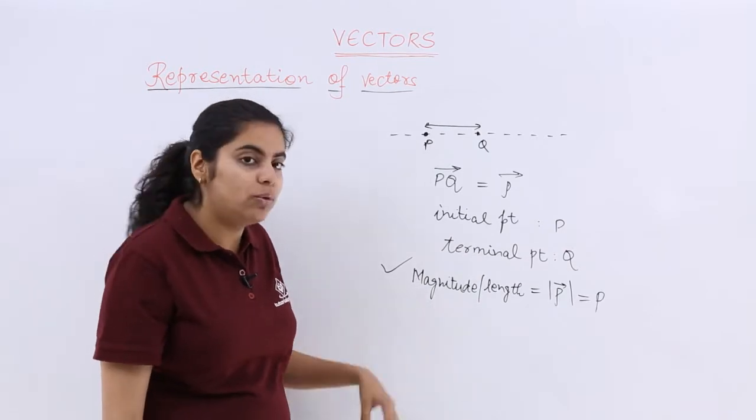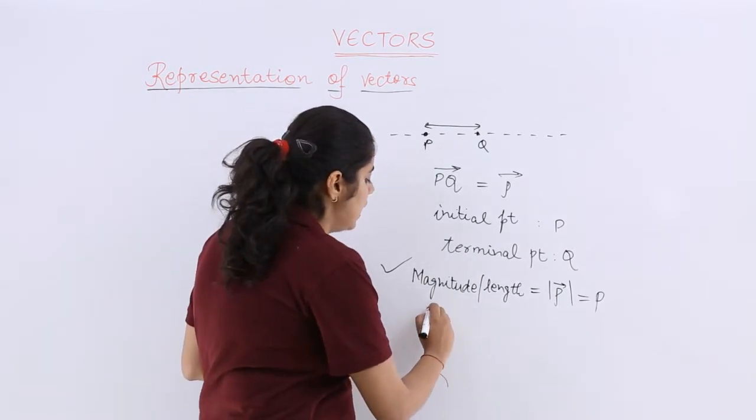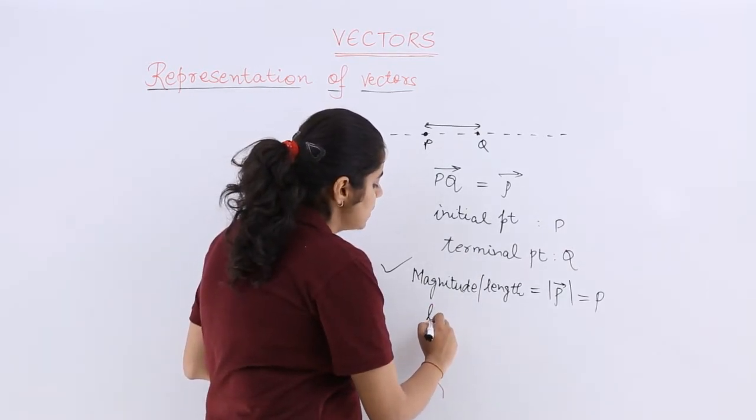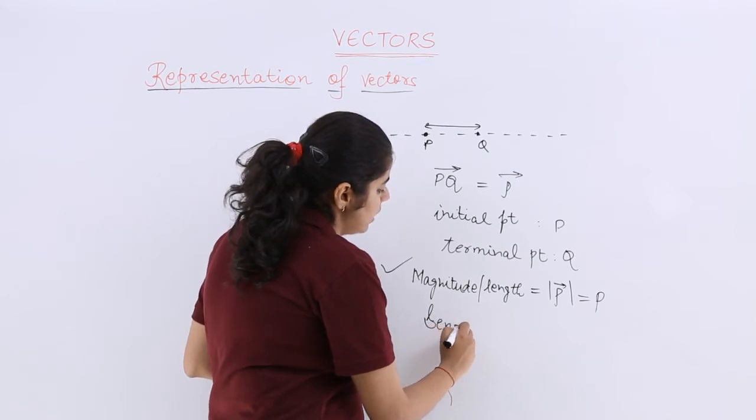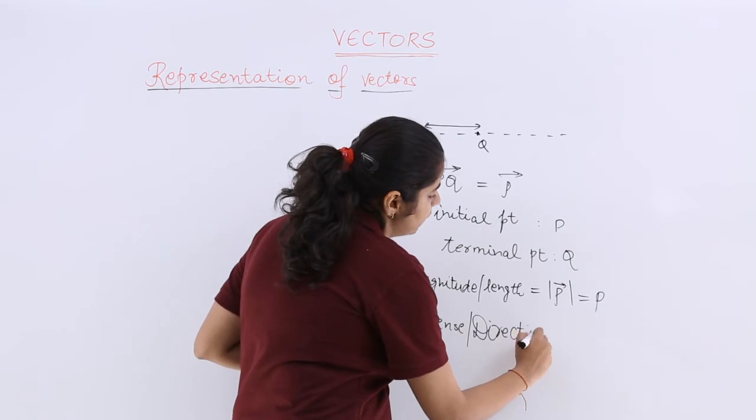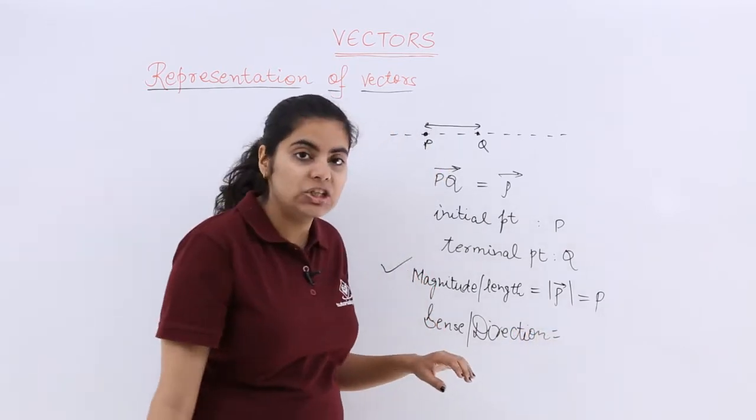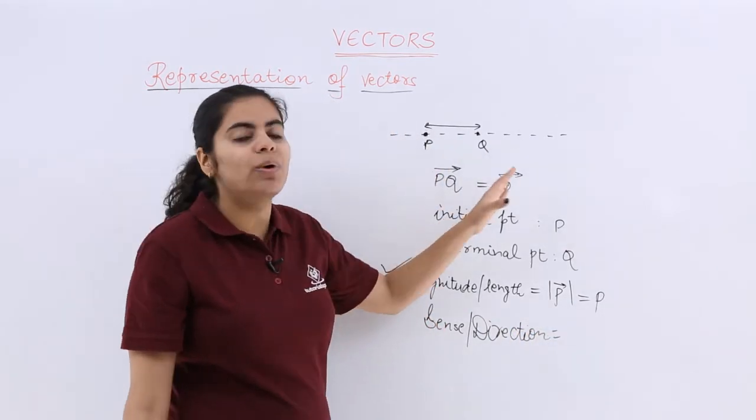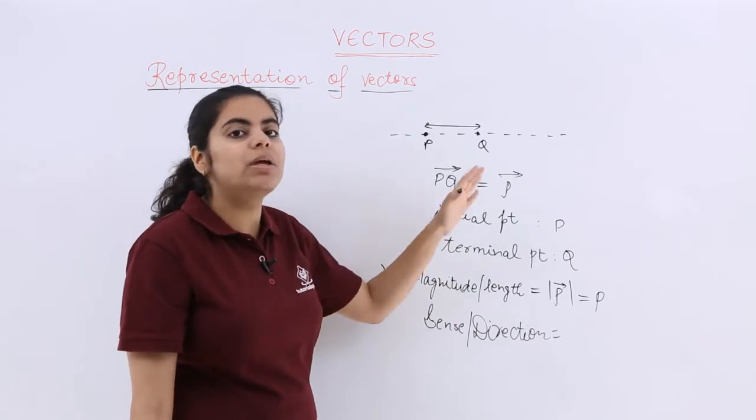Now next, having discussed magnitude and length, I will talk about the sense. The sense is also called the direction. What is the direction? When I go from P to Q, I say the direction is from P to Q.